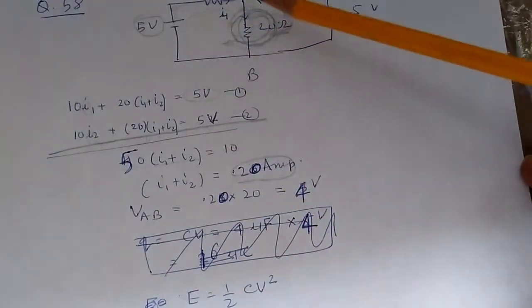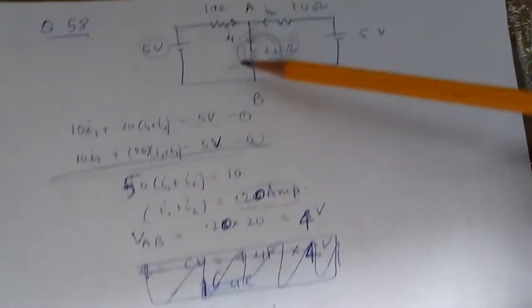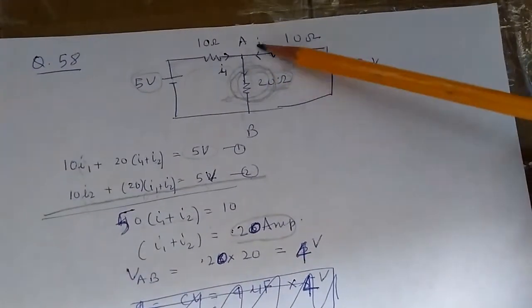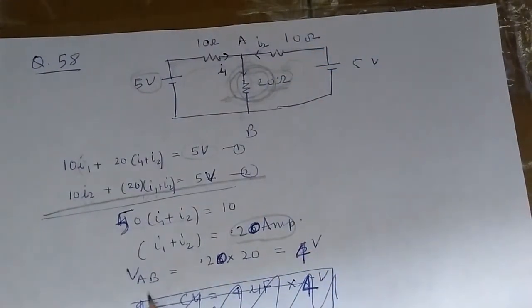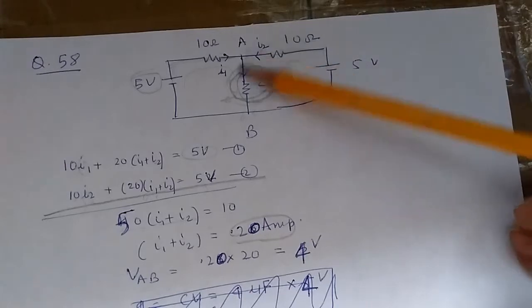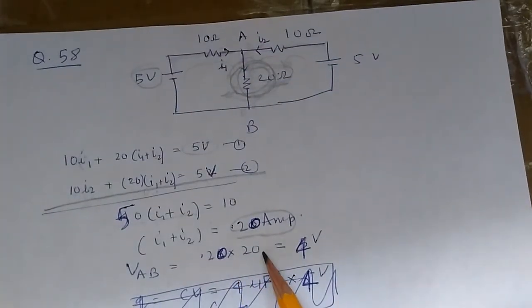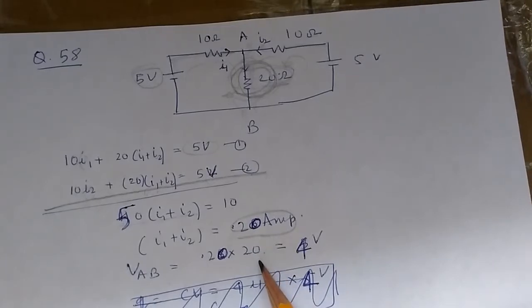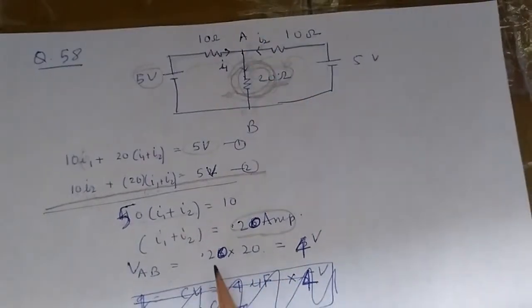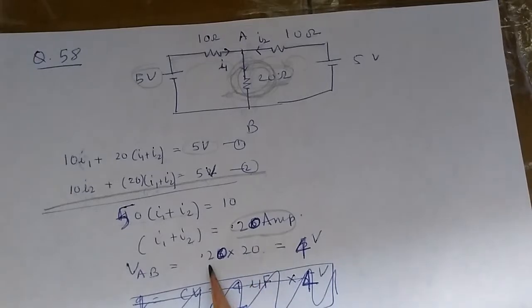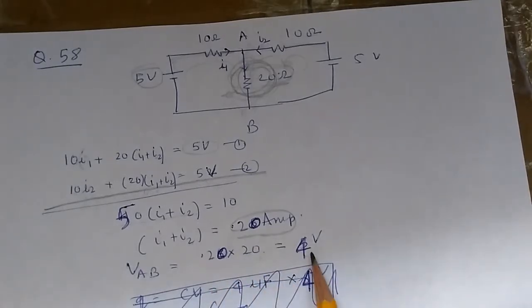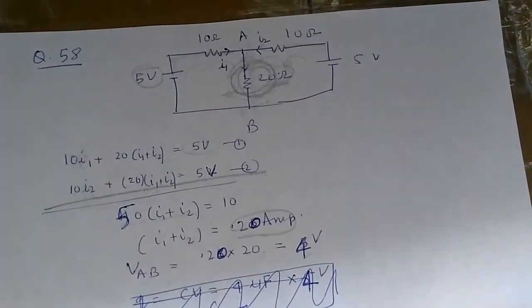Now because of this current flow, there will be a voltage drop across AB. We can find VAB equals I times R. I we just calculated as 0.2, and the resistor is 20 ohms. So the voltage drop is 0.2 times 20, which equals 4 volts.